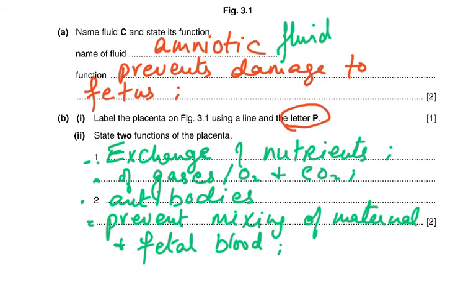State two functions of the placenta. I always say the placenta is like the border between India and Pakistan — it allows exchange, it does not produce anything. The mother's blood is on one side and the fetal blood is on the other. Oxygen diffuses from the mother's blood into the fetal blood; carbon dioxide from the fetal blood diffuses into the mother's blood, and the mother's lungs remove it. 'Exchange' is the word to use — exchange of nutrients, exchange of gases, and exchange of antibodies. The mother's antibodies to certain diseases cross to the fetus and protect it.